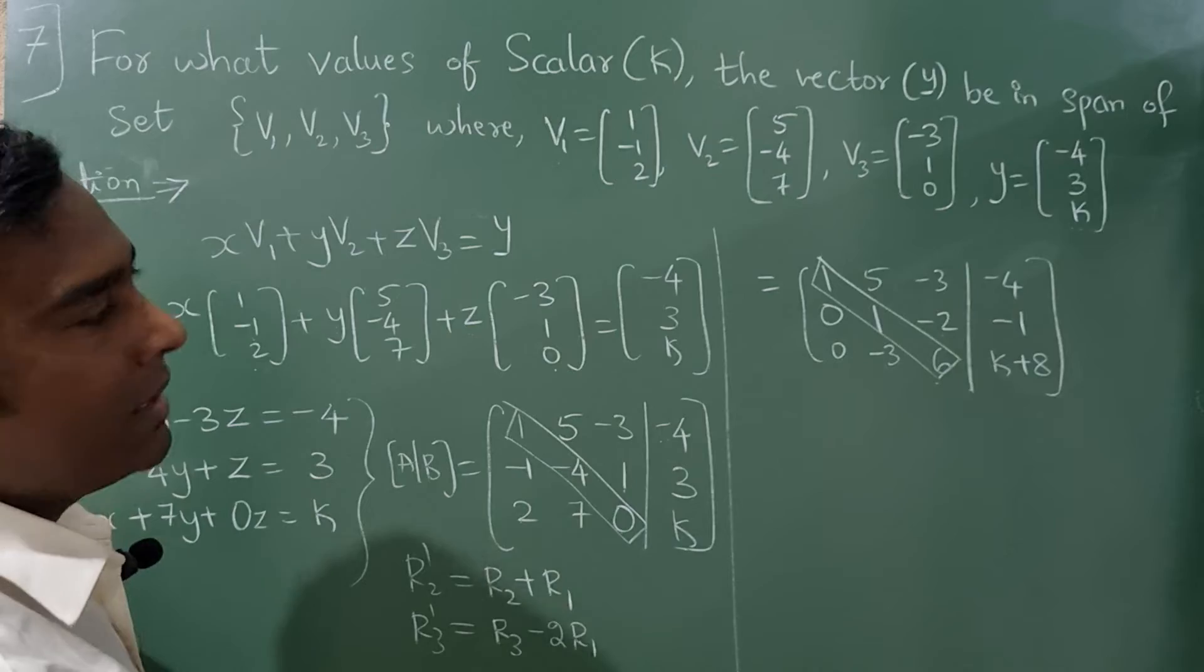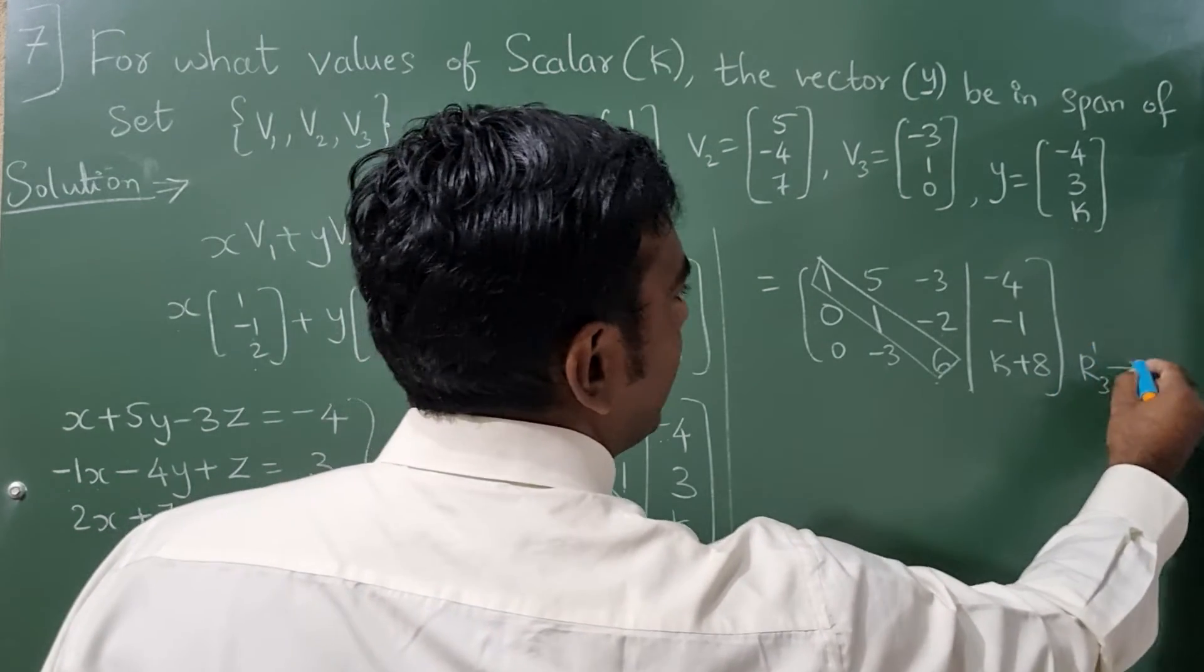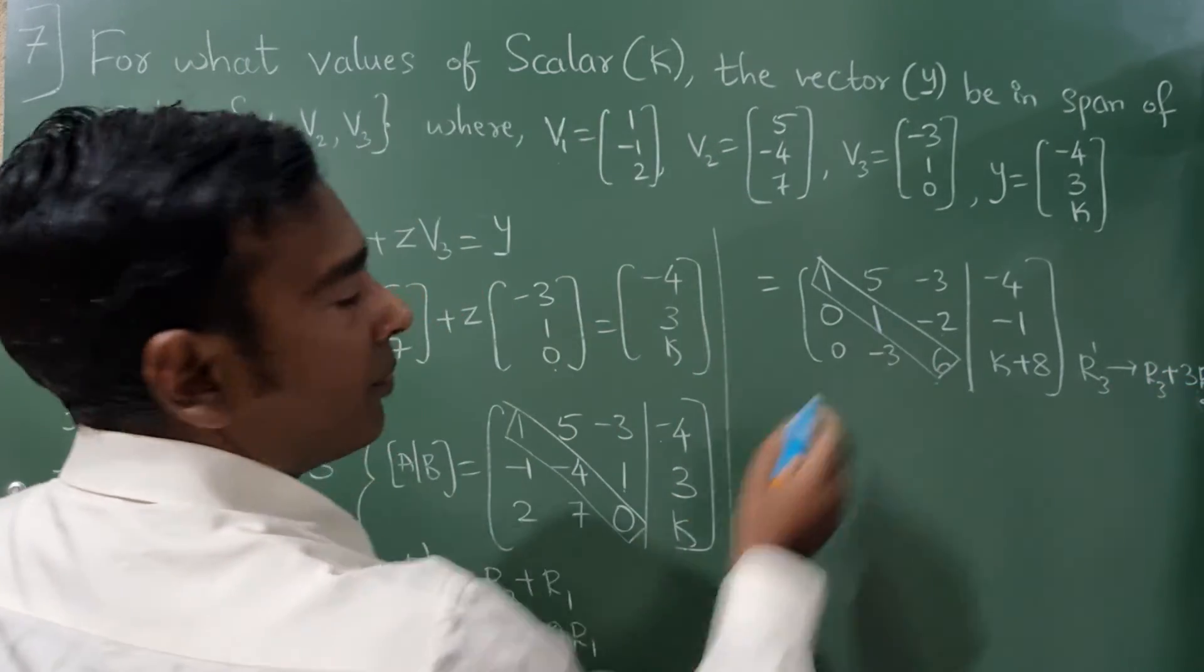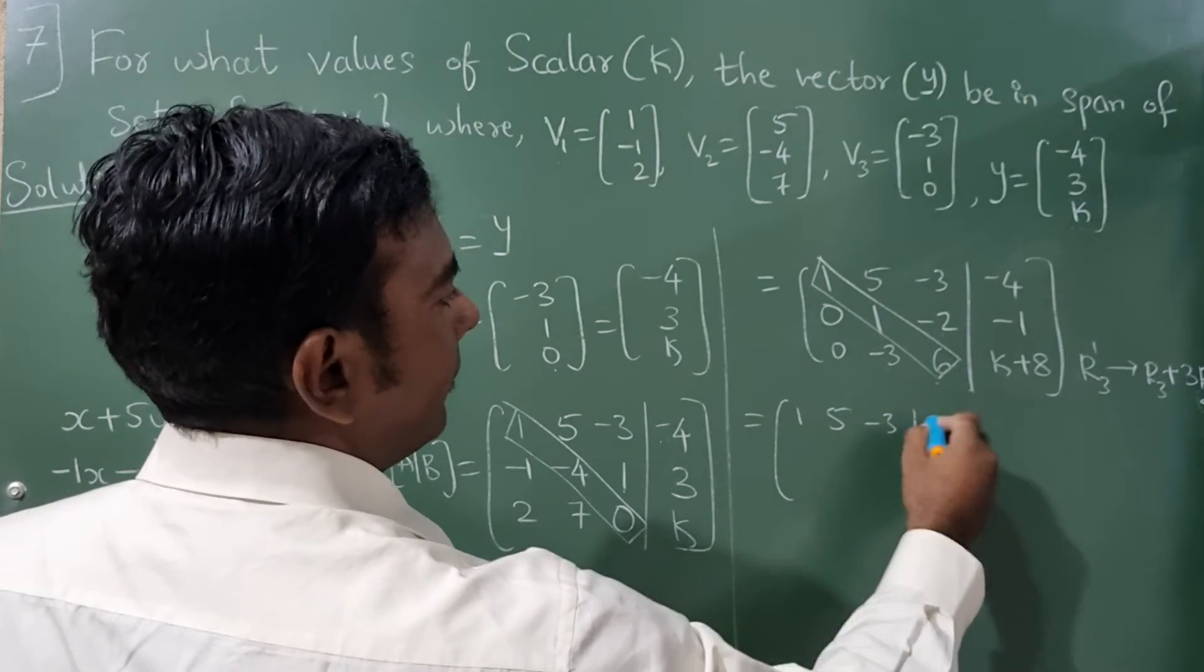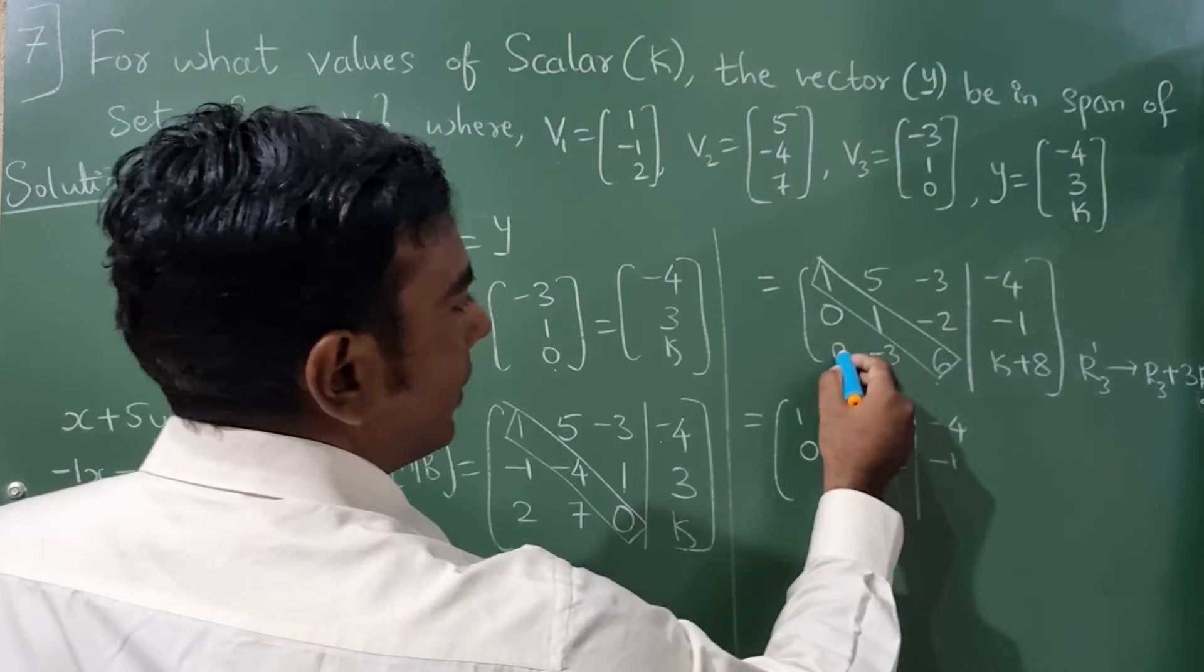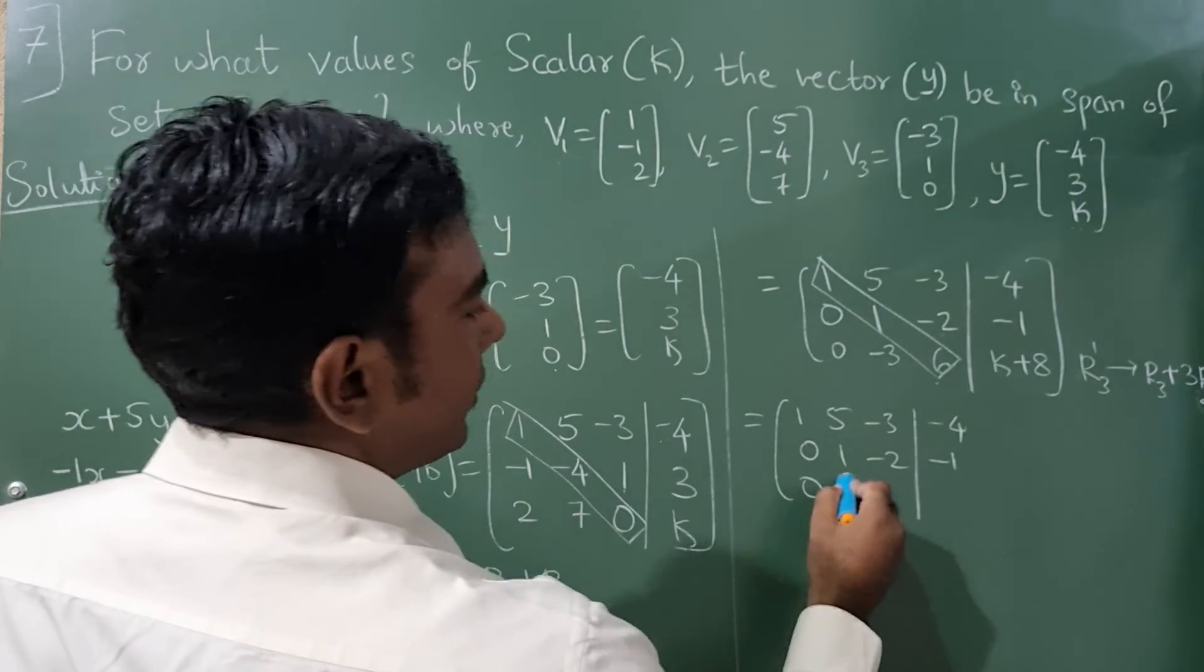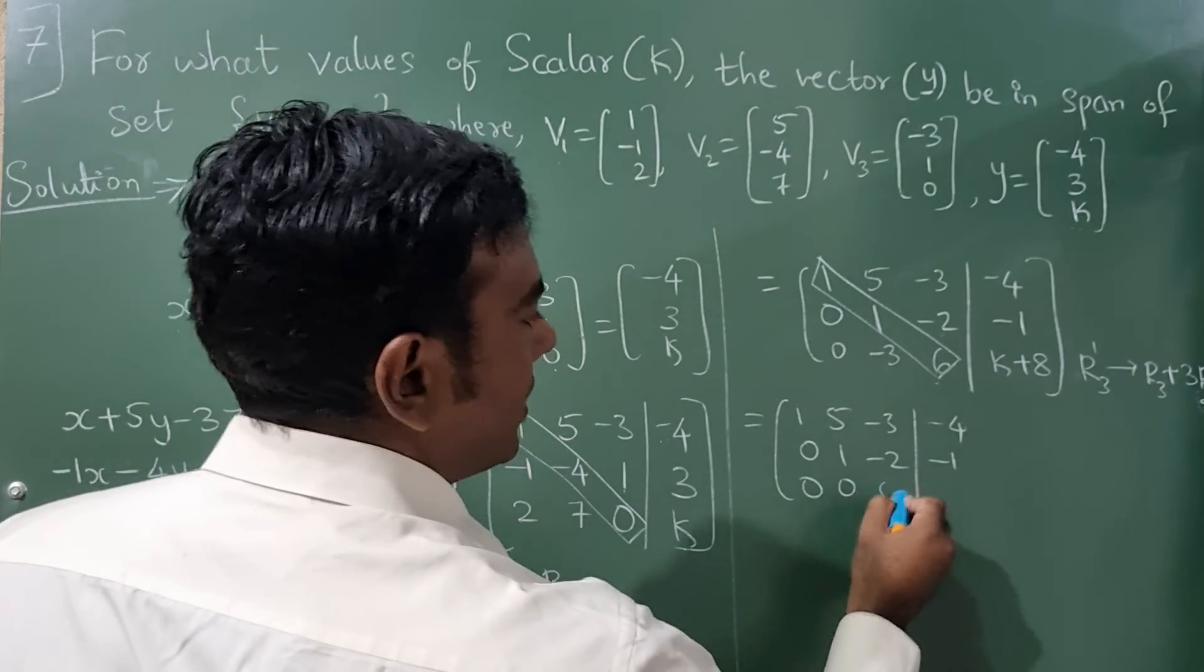You have to make this element as a 0. So I'll write R3 dash is equal to R3 plus 3 times R2. So first row remains same, second row remains same, third row this will become 0, minus 3 plus 3, minus 3 plus 3, from here 0, 6.